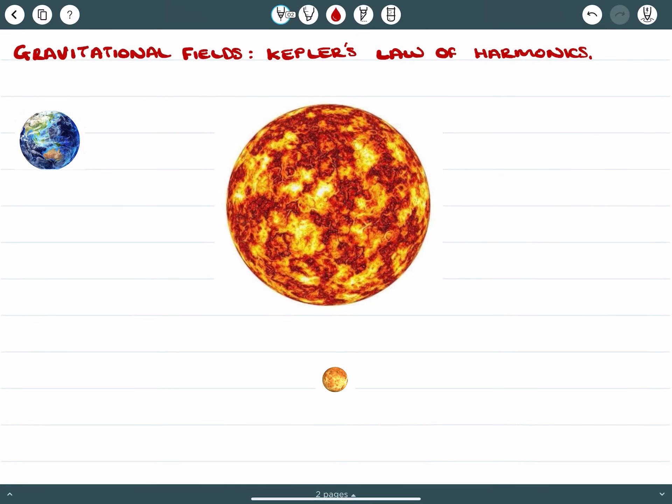Welcome back. We're going to continue our exploration of gravitational fields and look at the principle of Kepler's law of harmonics. Johannes Kepler was prior to Einstein but long after Newton, and what he noticed in his first law was that each planet moves in an elliptical orbit with its star.